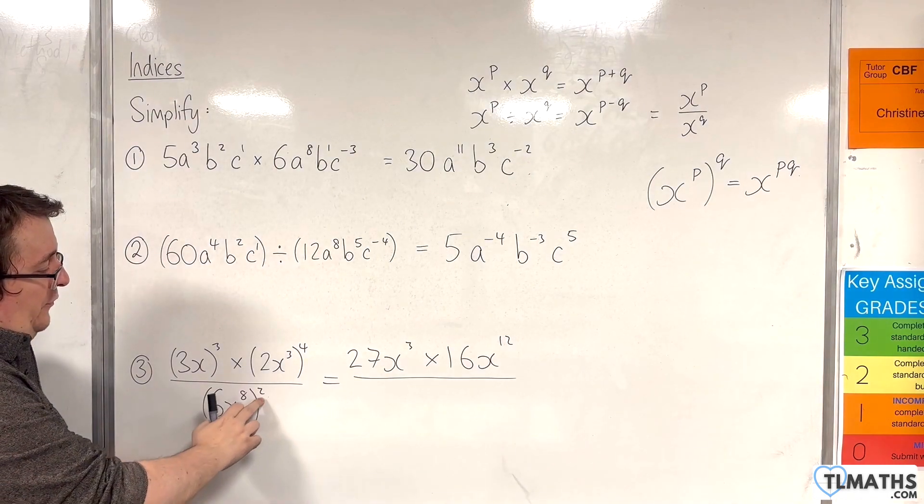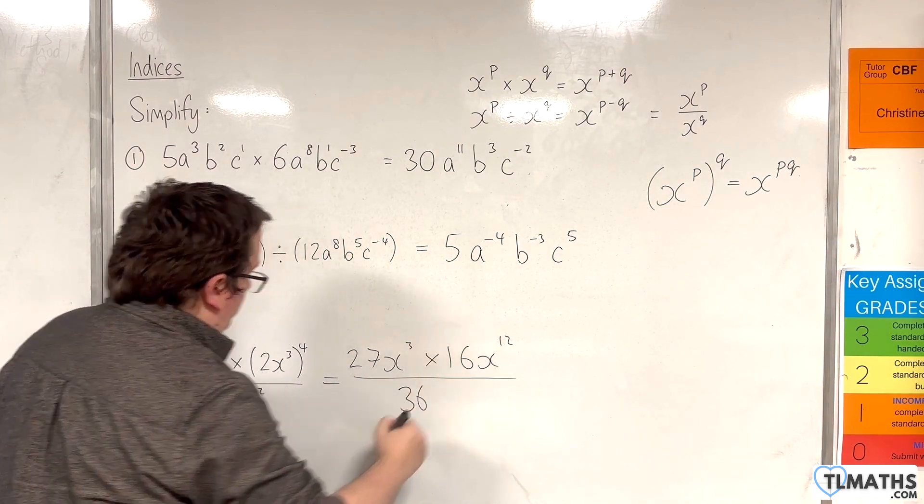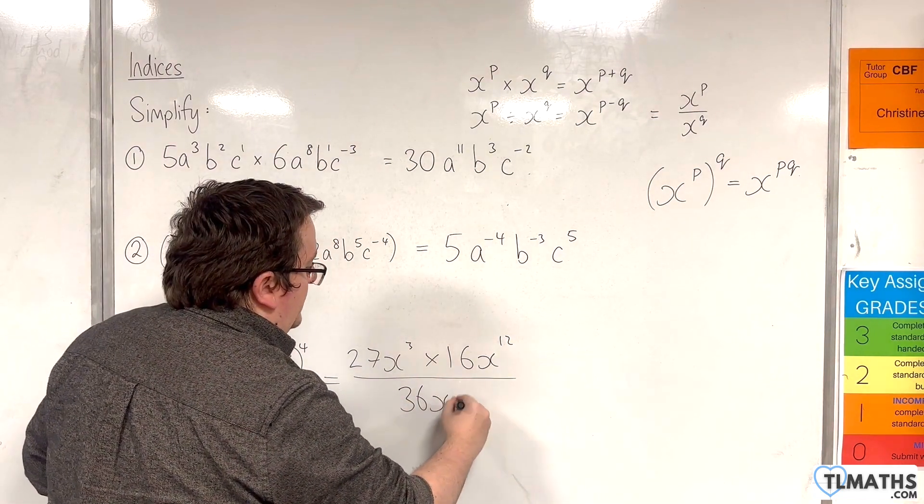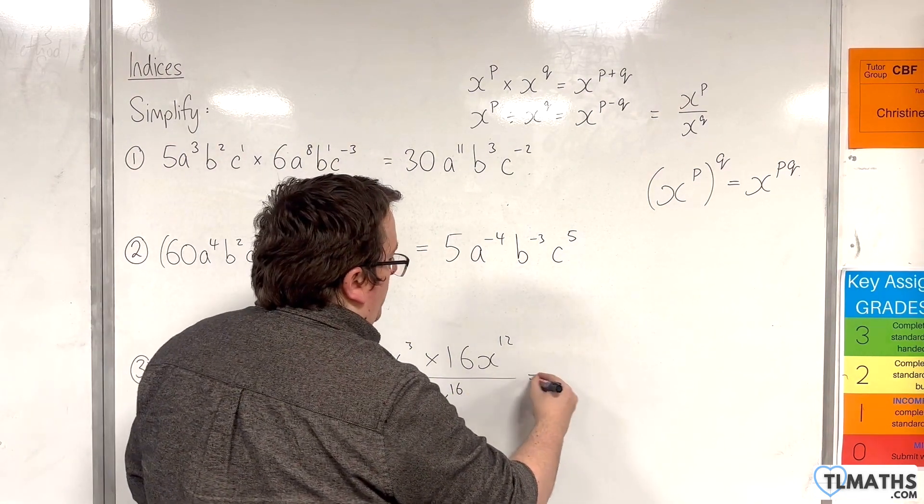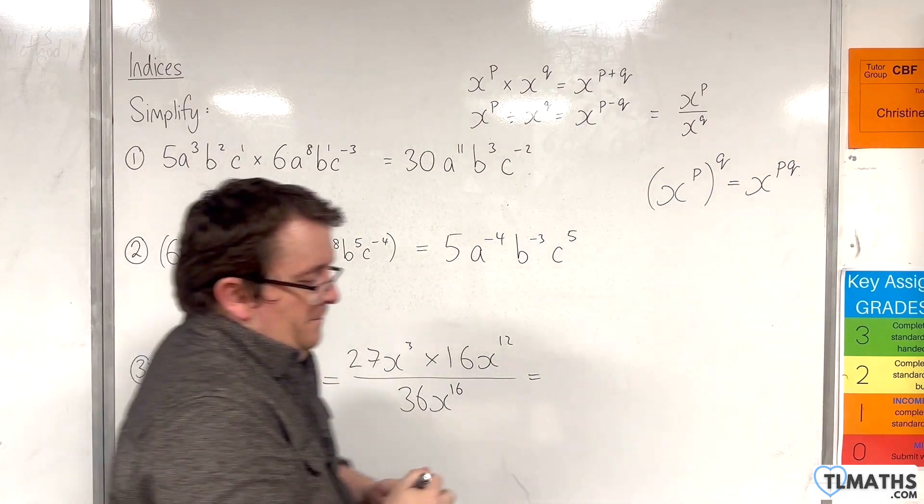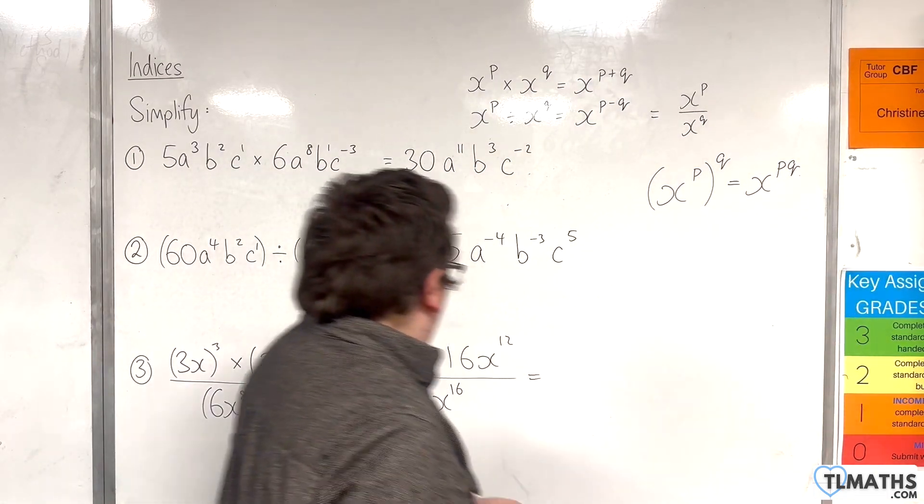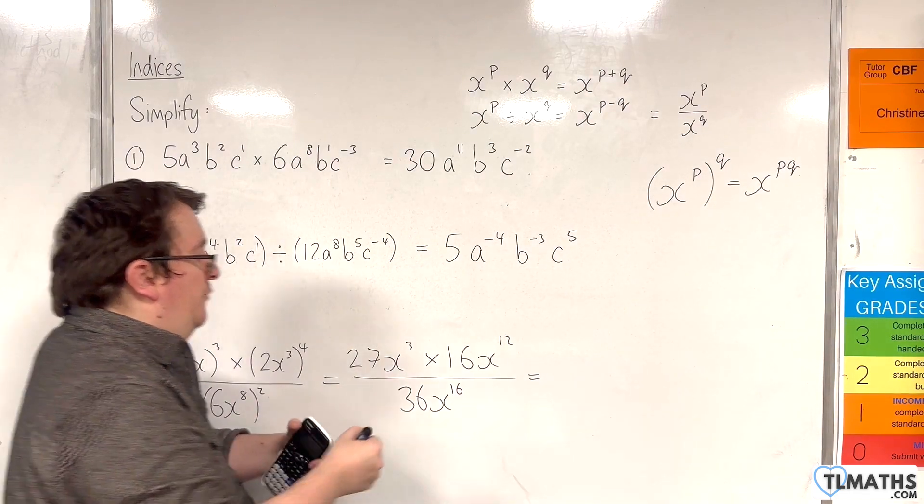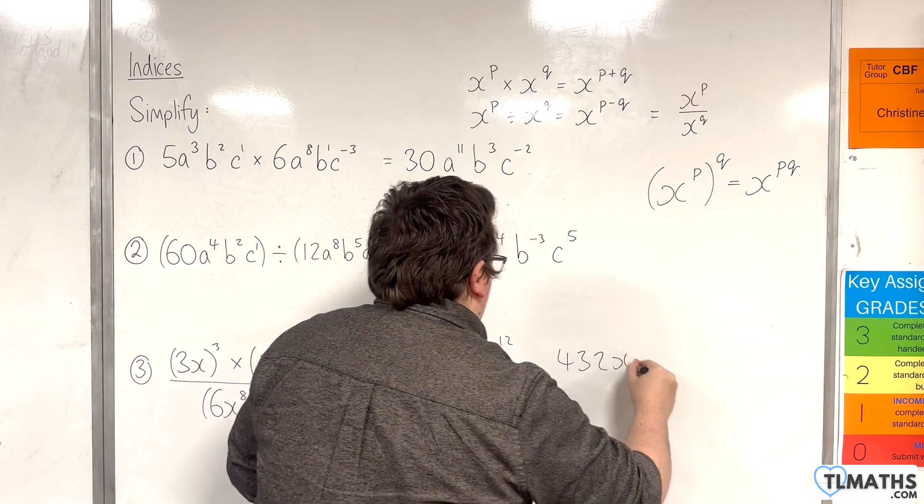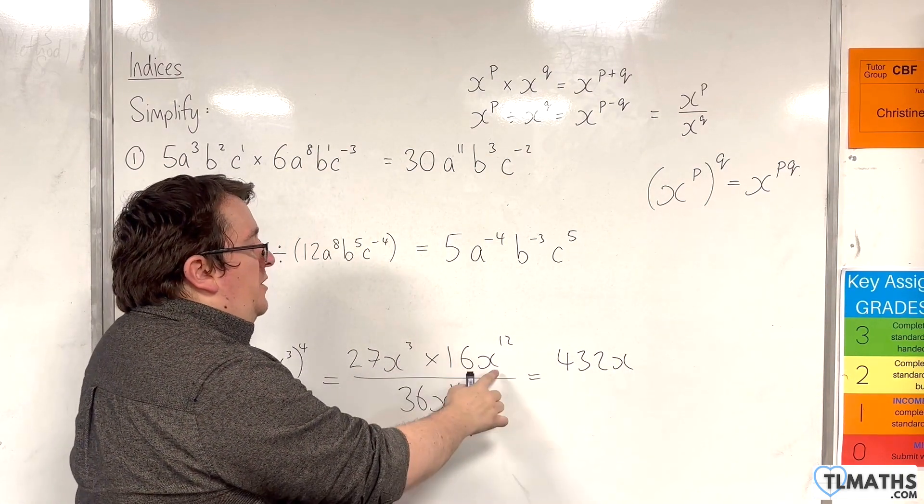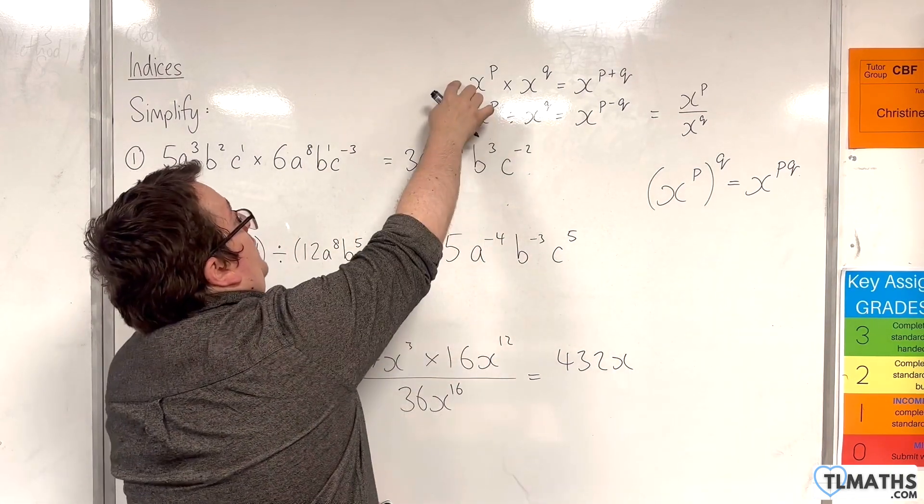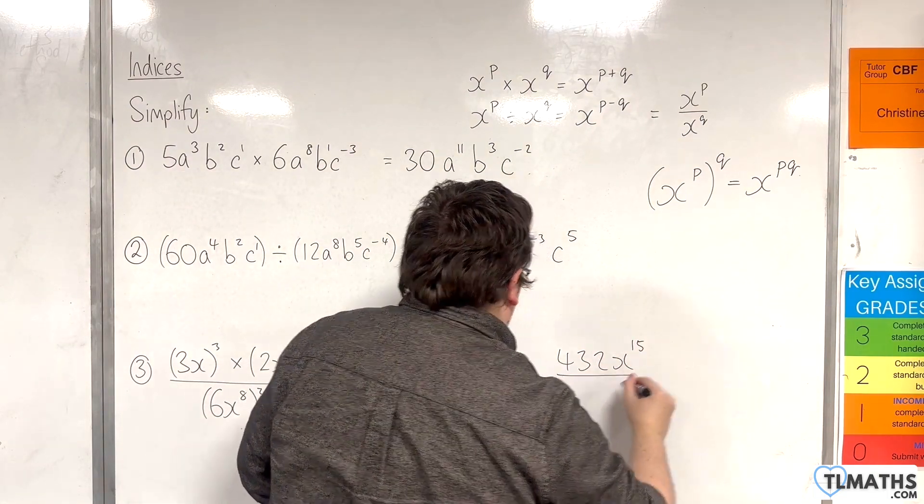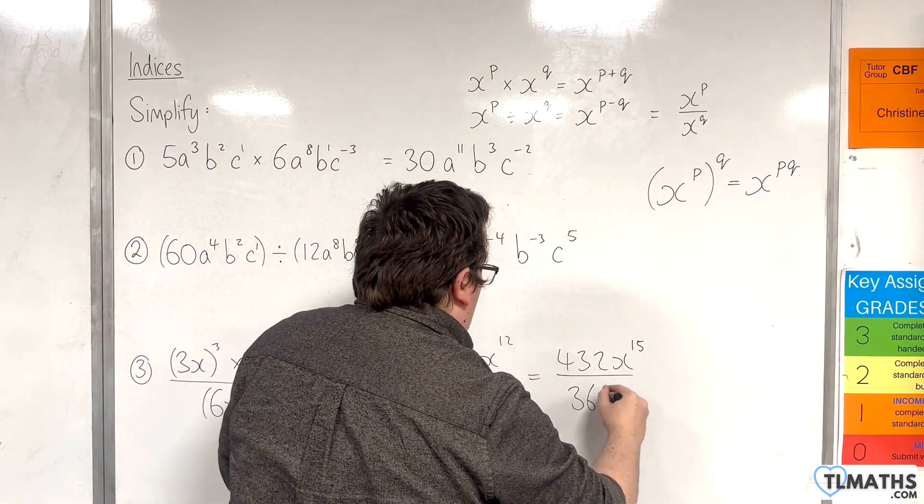Then we have 6 squared, which is 36. And x to the 8 squared is x to the 16, 8 times 2. So in the numerator, we have 27 times by 16, which is 432. And then we have x cubed times x to the 12. So using that rule, that's got to be x to the 15 over 36x to the 16.